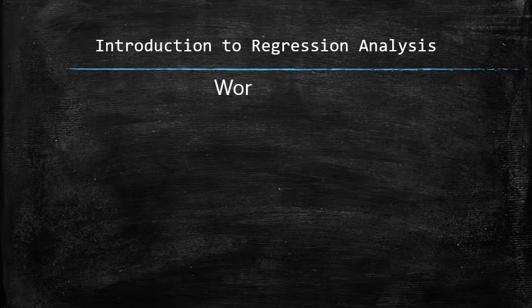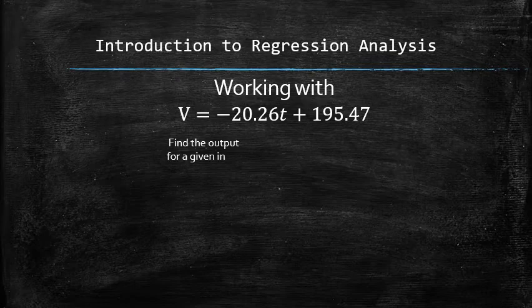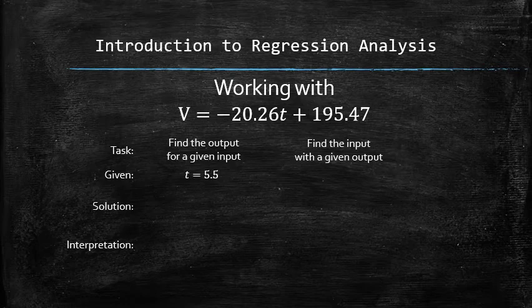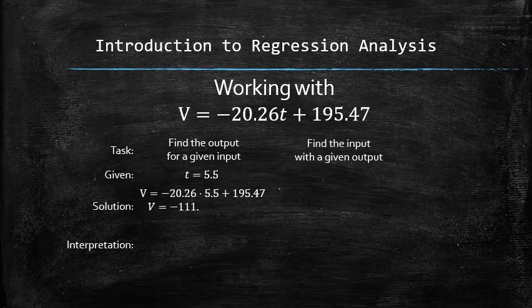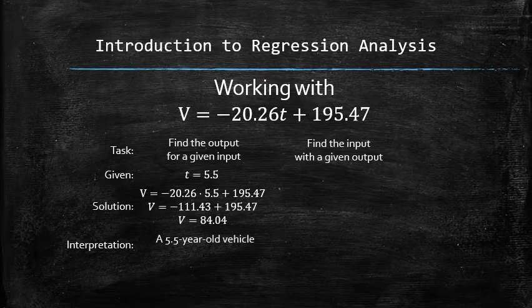We now can use the equation in two different ways. To find the output for a given input and to find the input with a given output. For example, we can find the value of a vehicle that is five and a half years old by plugging in the given t value into the equation and computing the right hand side. The value of a five and a half year old vehicle is $8,404 according to the equation.